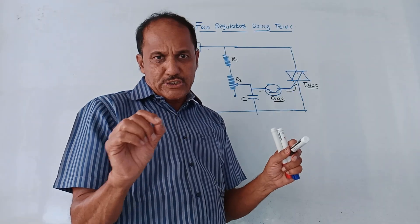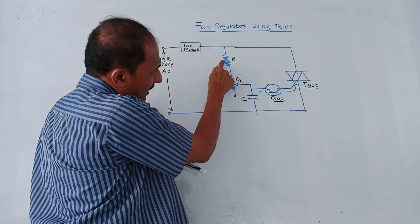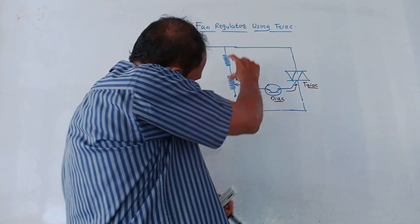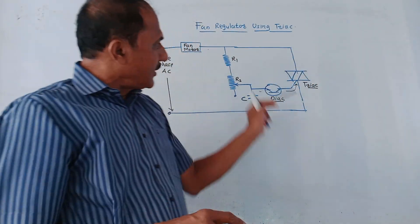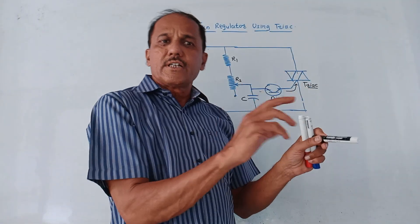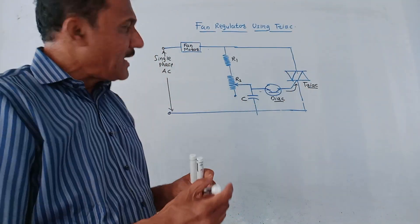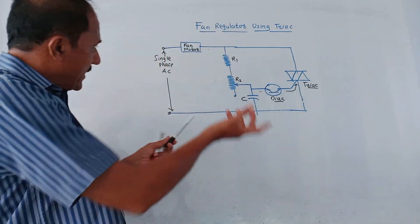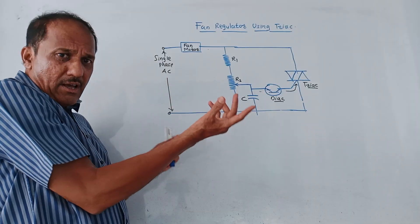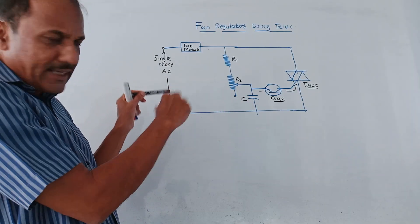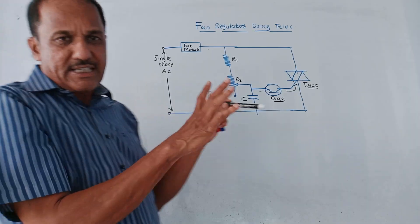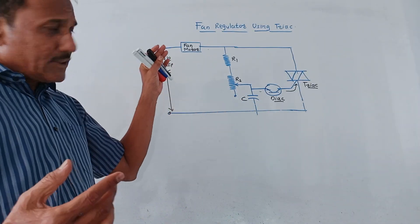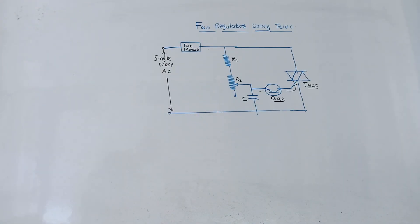There is a term called RC time constant, which is decided by the values of R1, R2, and C. By changing the position of the potentiometer, you can vary the triggering angle of the TRIAC and accordingly vary and adjust the fan speed. Since DIAC and TRIAC are bi-directional devices, both the positive and negative parts of the AC input are handled. This is how fan speed can be regulated using the combination of DIAC and TRIAC.